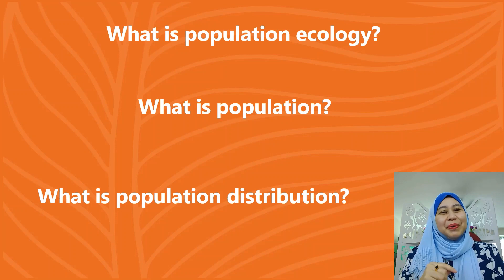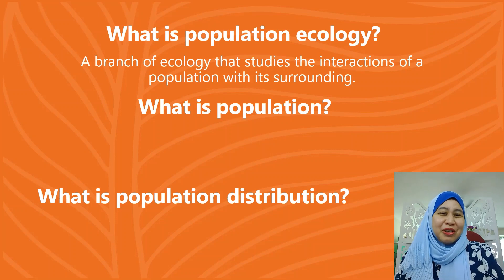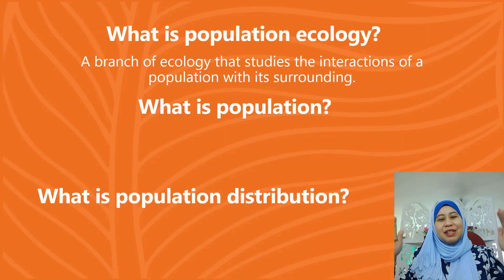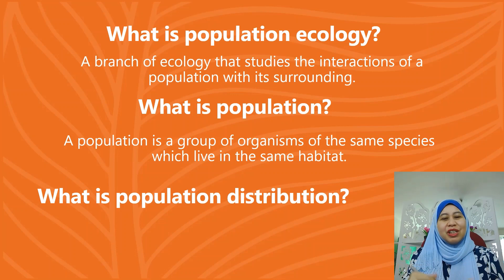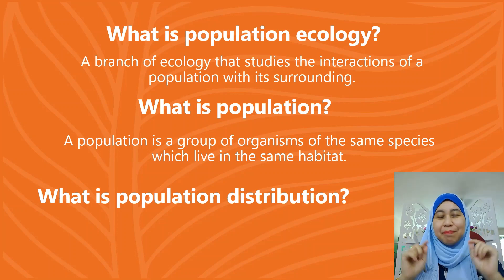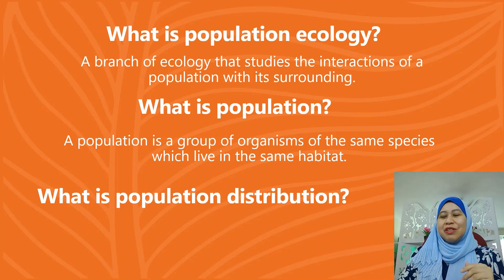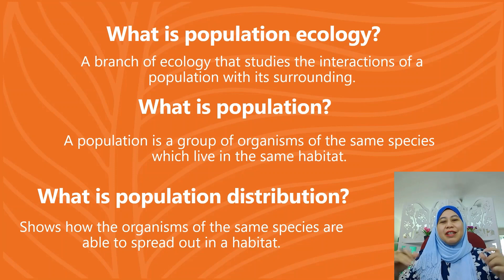We are going to see some of the important terminology used in this chapter. First, what is Population Ecology? Population Ecology is a branch of ecology that studies the interaction between the population and its surrounding environment. Next, what is Population? Population is a group of organisms of the same species which live in the same habitat. And what is Population Distribution? Population Distribution shows how organisms of the same species are able to spread out in their habitat.